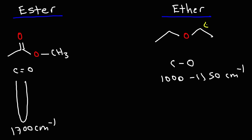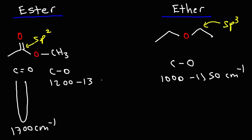You want to take into account the type of carbon attached to the oxygen. In the ether, we have an sp3 carbon; in the ester, we have an sp2 carbon. Therefore, the CO stretch is going to be different — it's going to be higher, between 1,200 and 1,300.